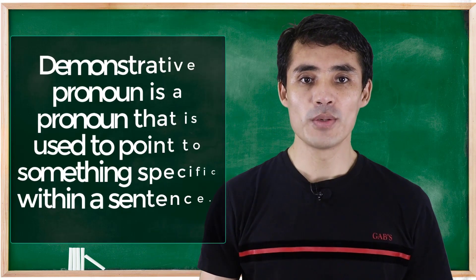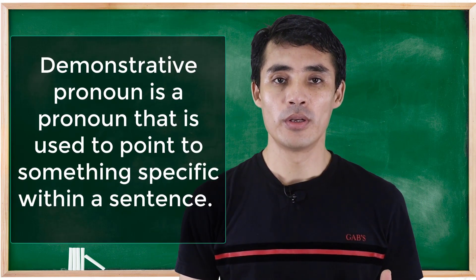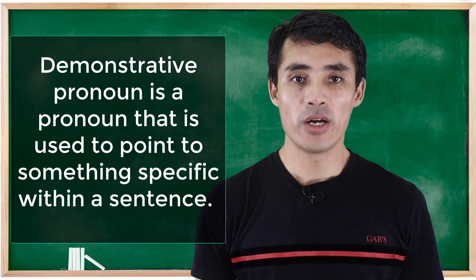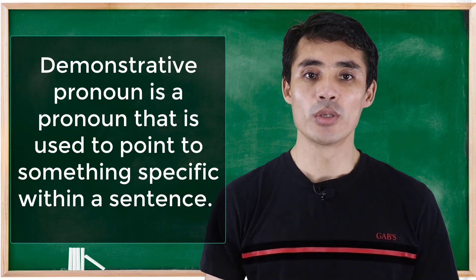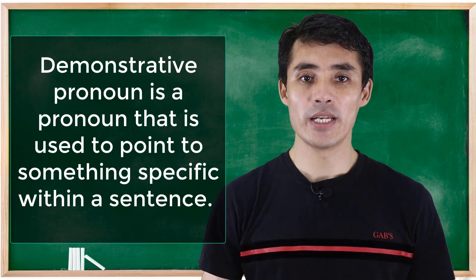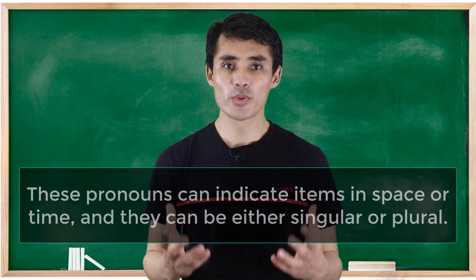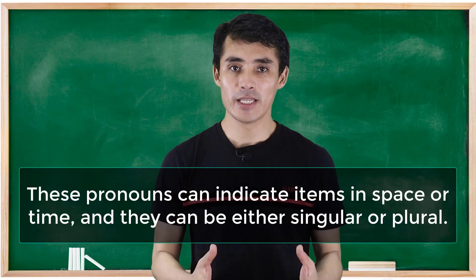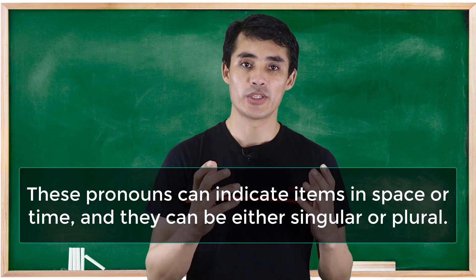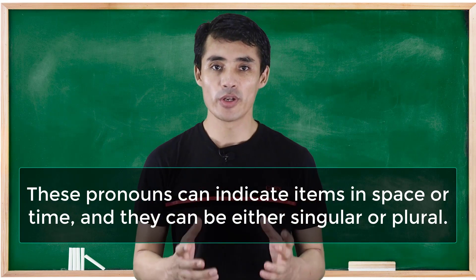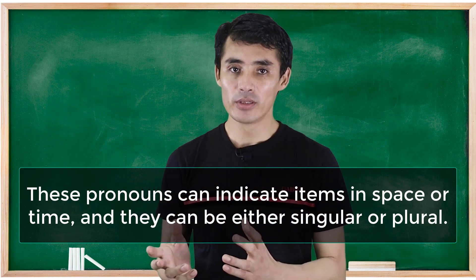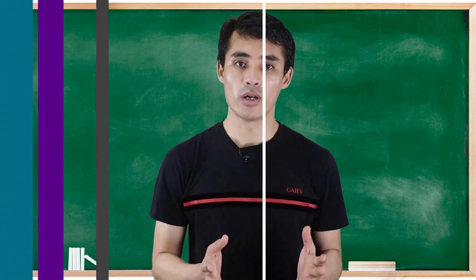What is a demonstrative pronoun? A demonstrative pronoun is a pronoun which is used to point something specific within a sentence. These pronouns can indicate something in a space or a time, and they can be either singular or plural.